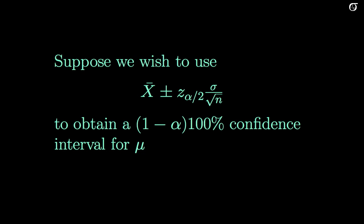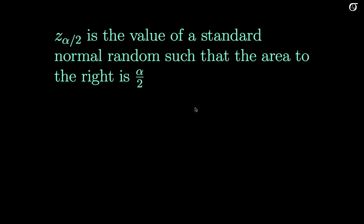Suppose we wish to use our normal confidence interval formula for sampling from a normally distributed population where sigma is known to get our 1 minus alpha times 100% confidence interval for mu. Our objective here is to find the appropriate z alpha over 2 values. We've previously defined z alpha over 2 to be the value of a standard normal random variable such that the area to the right is alpha over 2.